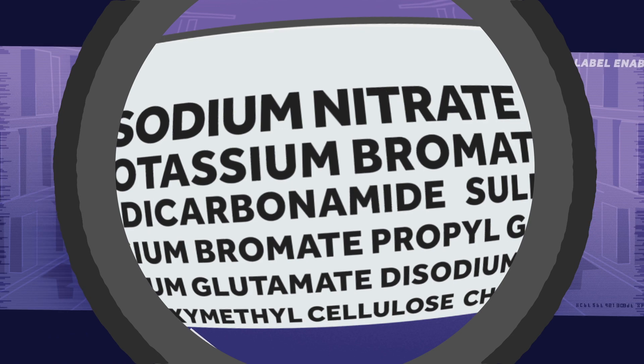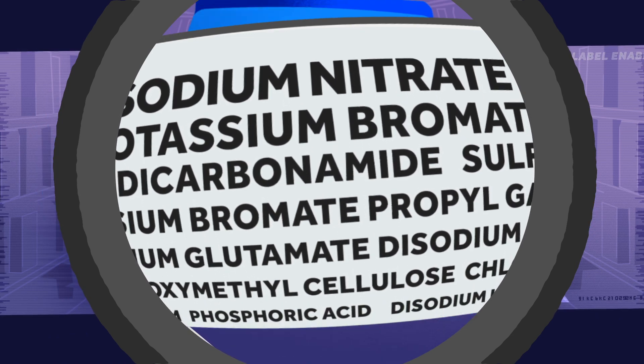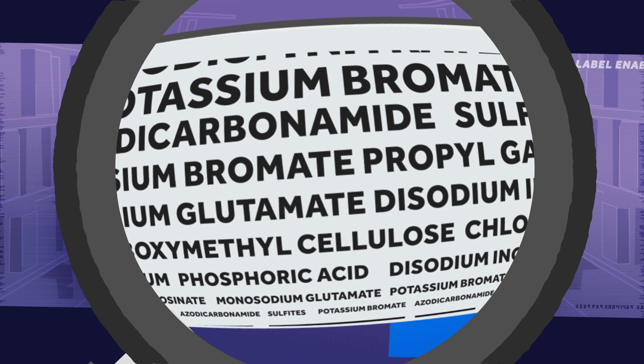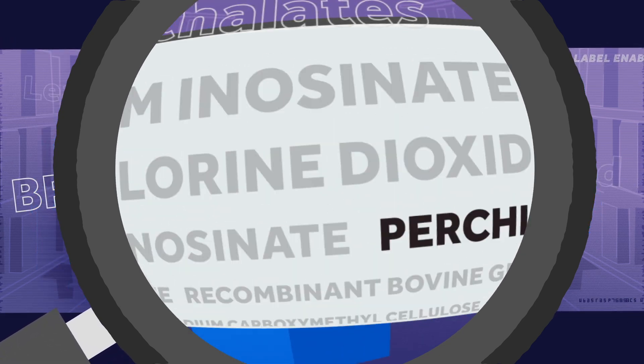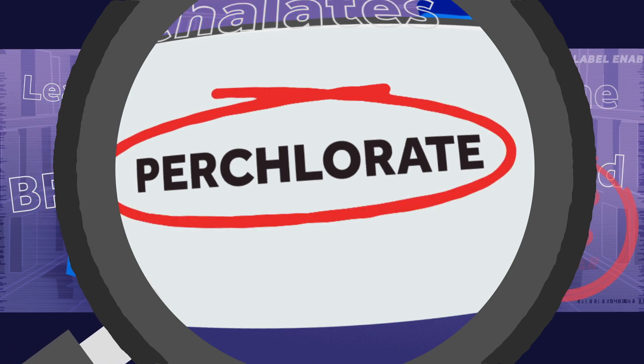Sometimes substances used to package or process our food accidentally get into the food. These become hidden contaminants. One of those contaminants you've probably never heard of is called perchlorate.